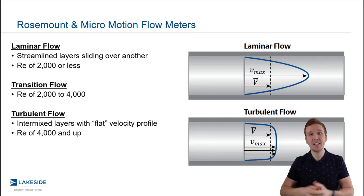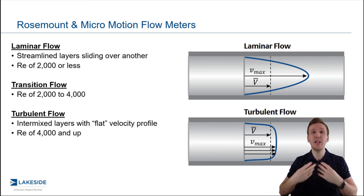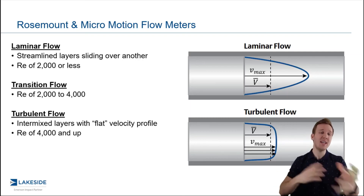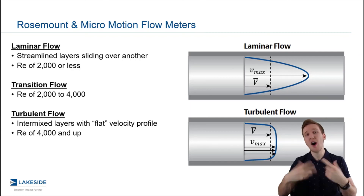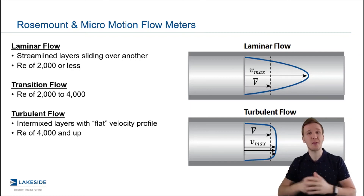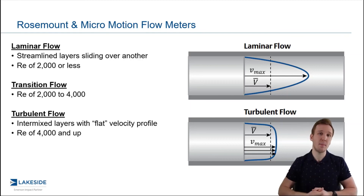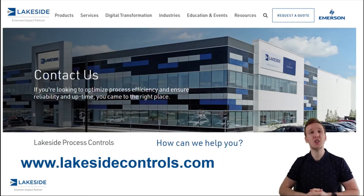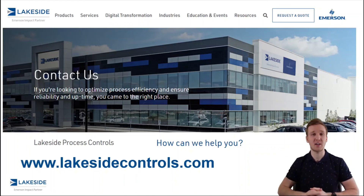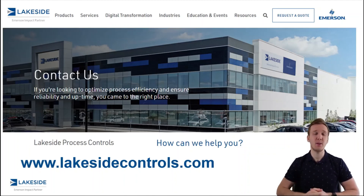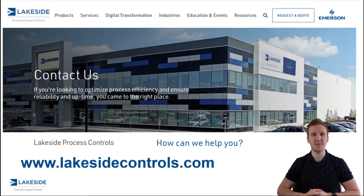Now, how does this impact you? Not really much, because when we do our sizing we take this into consideration — but you'll often hear something called straight pipe diameters, which we'll talk about in the next video. This plays a role based off the Reynolds number. Should you have any questions about Rosemount or Micromotion flow meters or any of our other technologies, please reach out to us at www.lakesidecontrols.com. Thanks and have a great day.